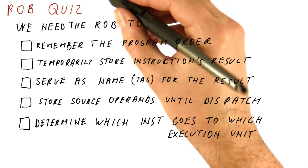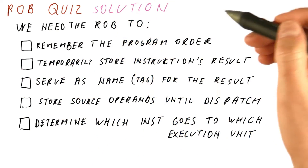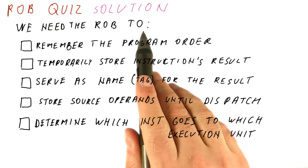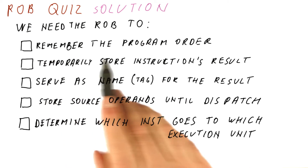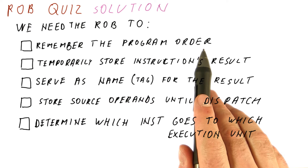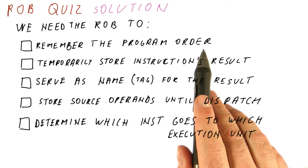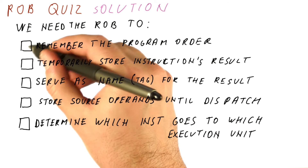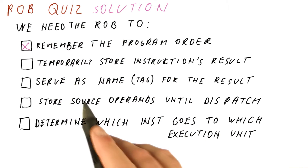Let's see the ROB quiz solution. We do need the ROB tool — remember the program order. That's the only place where the program order is preserved between the issue, which is done in program order, and the commit, which is also done in program order, because things in between are out of order. So we definitely need the ROB for that.